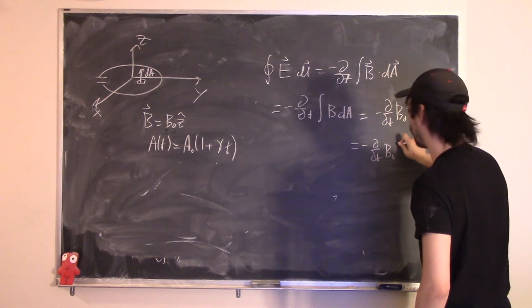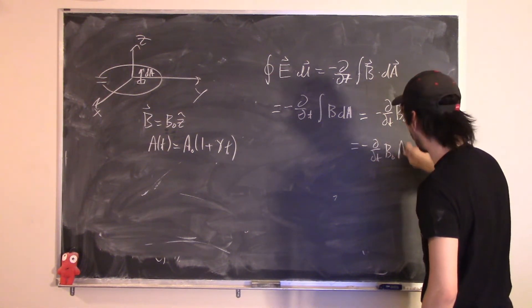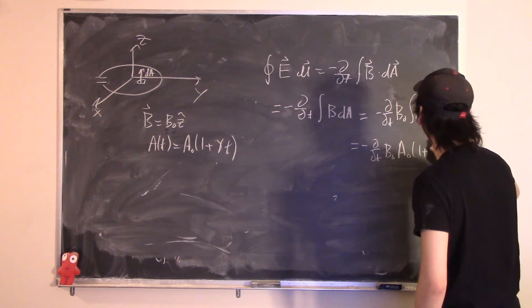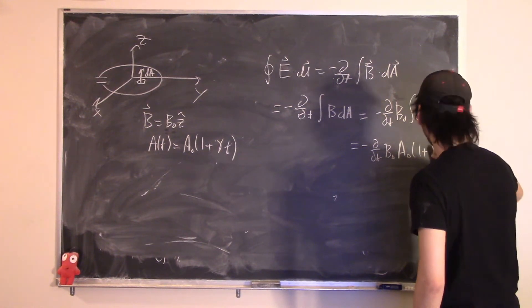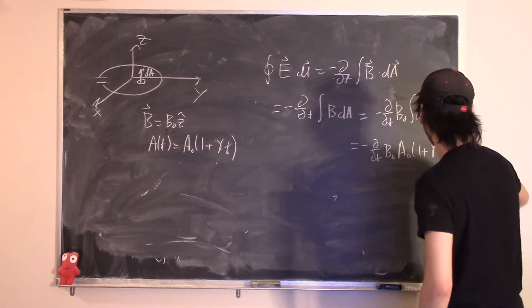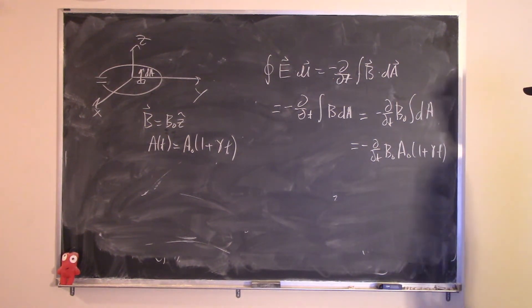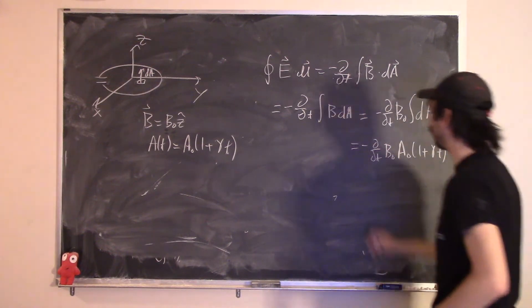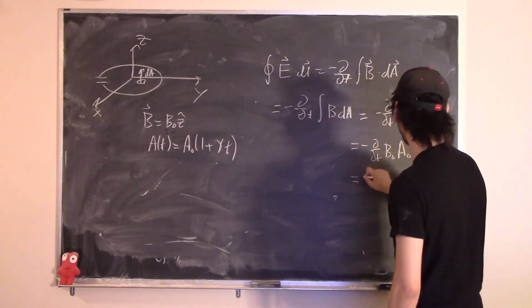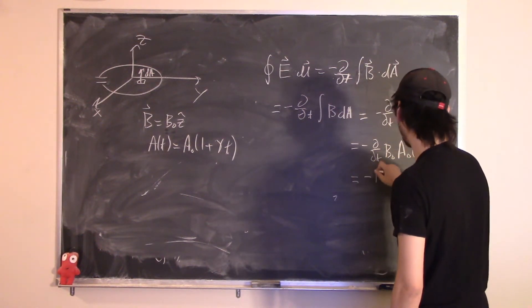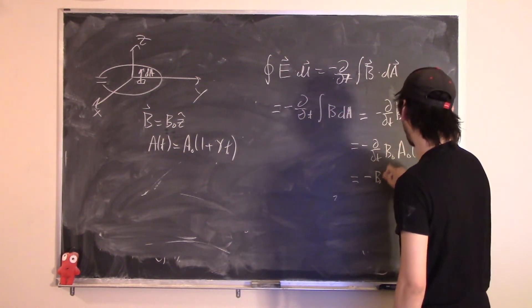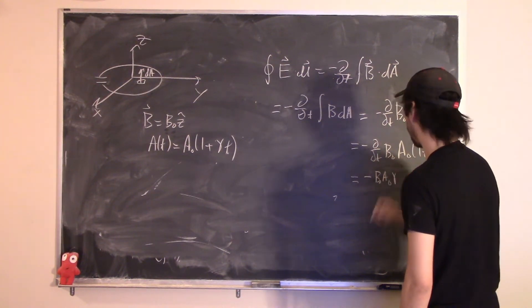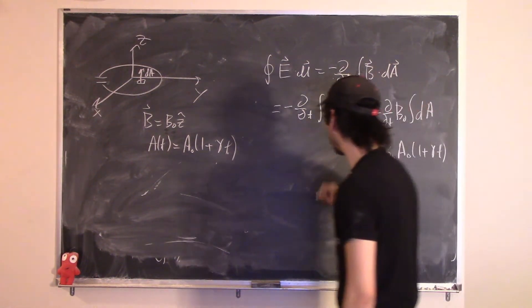Substituting A(t) = A0(1 + gamma t) and taking the time derivative with a negative sign gives minus B0 A0 gamma. That's the right-hand side.